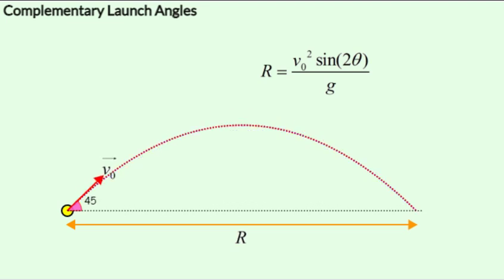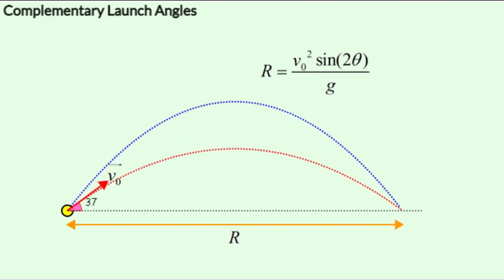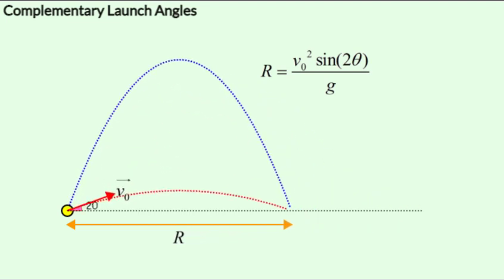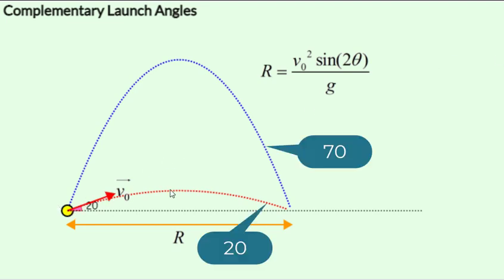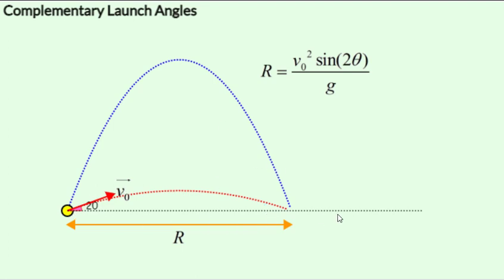Now let's take some complementary pairs where the contrast between the angles is high. Like this is a case where this is 20 degrees and this is 70 degrees and you can see that the range is the same as they add up to 90. So now it should be quite clear to you that complementary angles give us the same range.